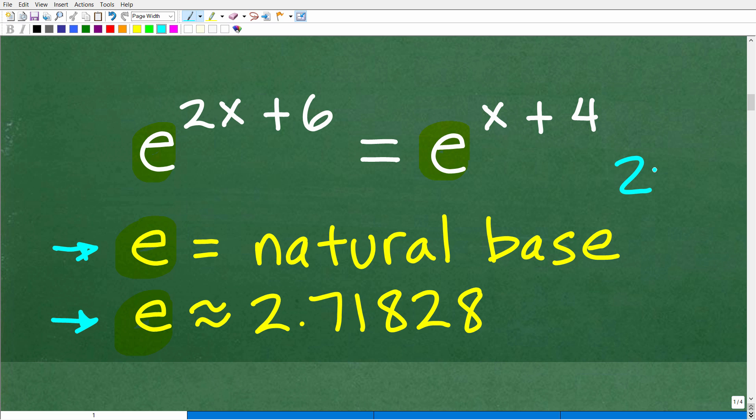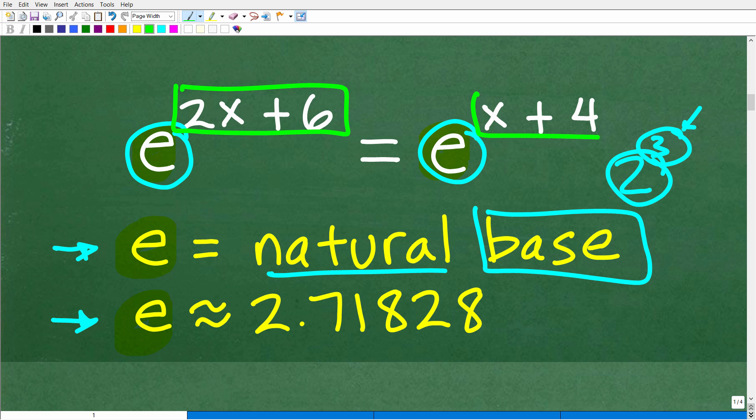Alright, now as we talked about, like something like 2 to the third power, 3 is the exponent, 2 is the base. So this is the natural base. E is the natural base. This is the base right here of these two powers. And this right up here, these expressions, these variable expressions, are the exponents. So this is what we're dealing with. Again, E is not a variable. It's the natural base E. And we're trying to solve for x.